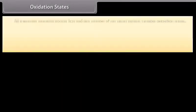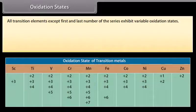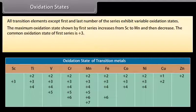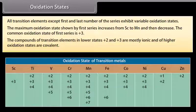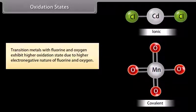All transition elements except the first and last member of the series exhibit variable oxidation states. The maximum oxidation state shown by the first series increases from scandium to manganese and then decreases. The common oxidation state of the first series is +3. Compounds in lower states (+2 and +3) are mostly ionic, and those in higher oxidation states are covalent. For example, ZnCl₂ and CdCl₂ are ionic, while Cr₂O₇²⁻ and MnO₄⁻ are covalent. Transition metals with fluorine and oxygen exhibit higher oxidation states due to their higher electronegative nature.